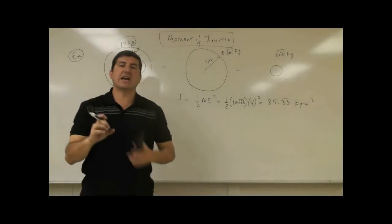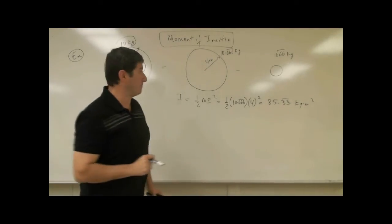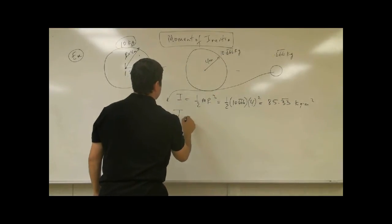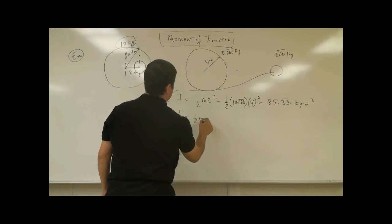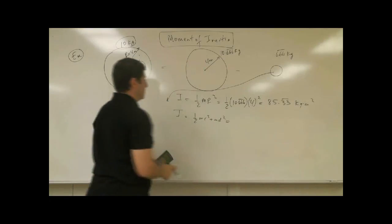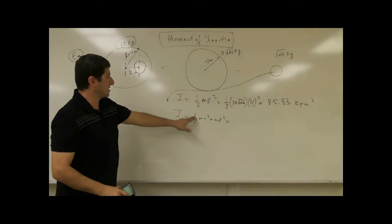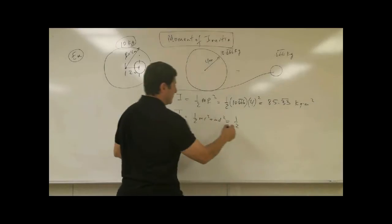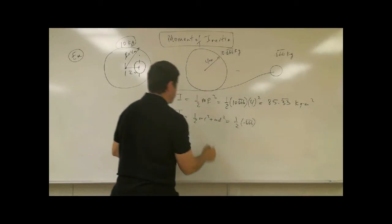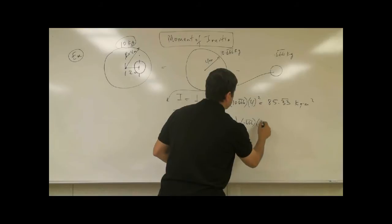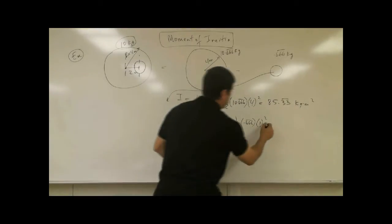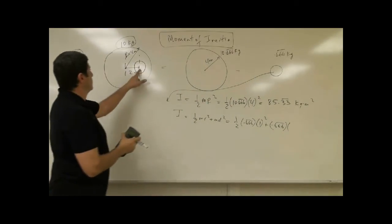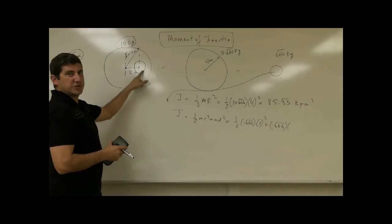For the cavity, I have to use the parallel axis theorem. Its moment of inertia is I equals one-half little m r squared plus m d squared. Its moment of inertia uses one-half because it's like a disc. What was its mass? 0.6̄ times its radius, one squared.